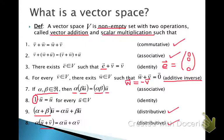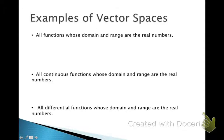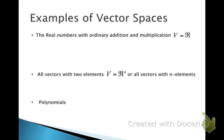If a space has all of these properties, then we call it a vector space. Examples of vector spaces include the set of all real numbers, and vectors in Rn — which could be R2, R3, and so on. All of these are vector spaces.